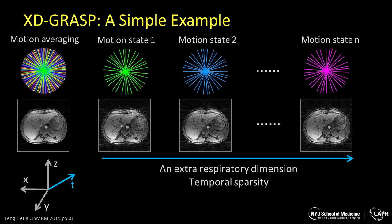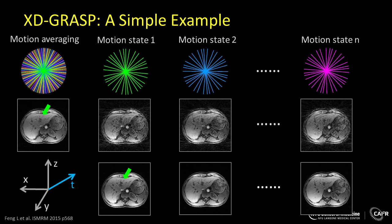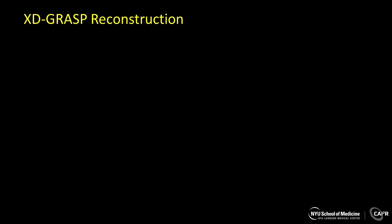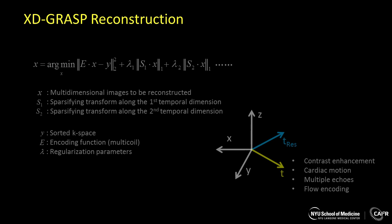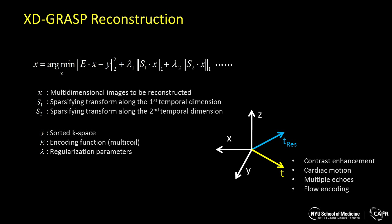However, this sorting process also generates new dynamic dimensions, so that we can have some temporal sparsities. We can perform a compressed sensing reconstruction along this new dynamic series to remove the undersampling artifacts. The XTGRASP reconstruction can be formalized in this way. We are generating an extra dimension for respiratory motion, so that we can add an additional constraint along this new respiratory motion dimension.